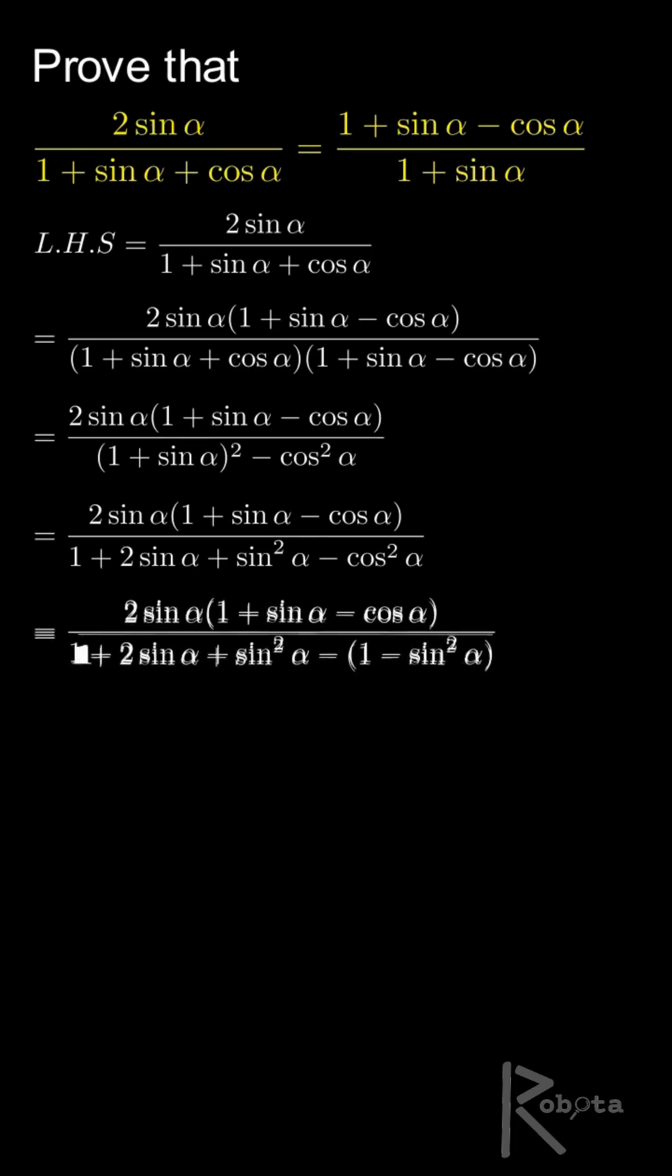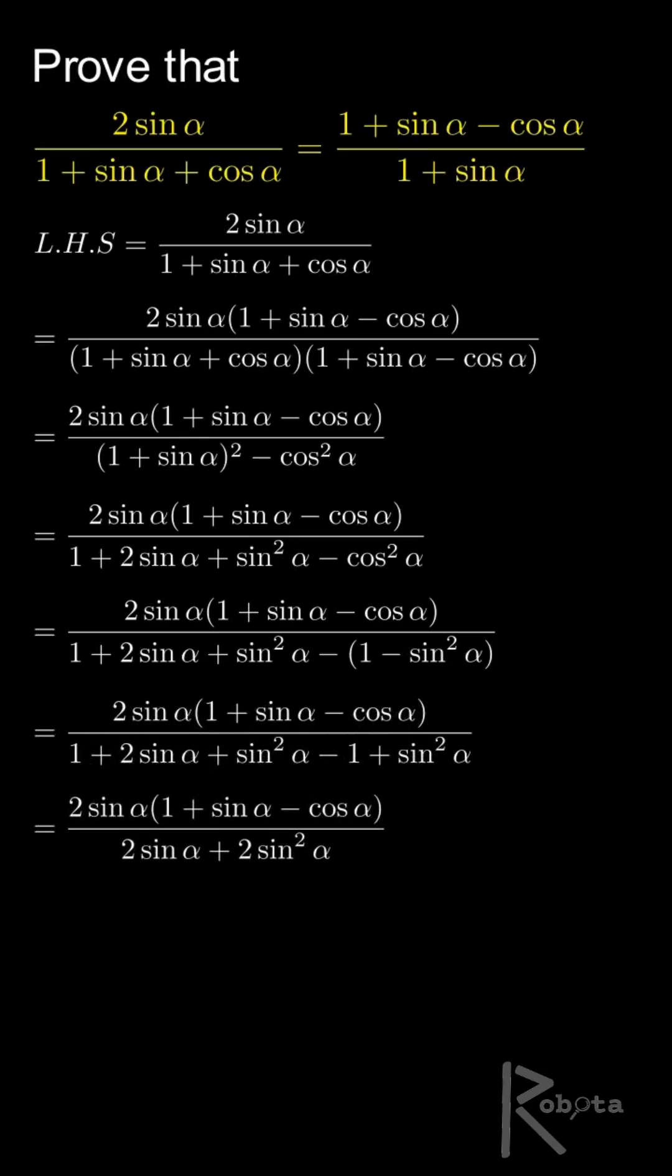Substitute that in. Now simplify the expression. The 1 and the negative 1 cancel out, and we are left with 2 sin α plus 2 sin squared α in the denominator.